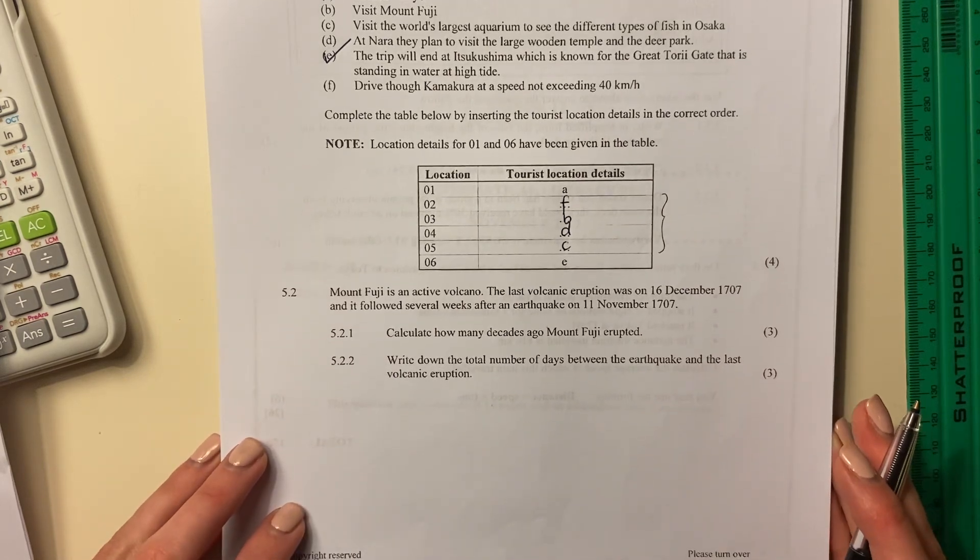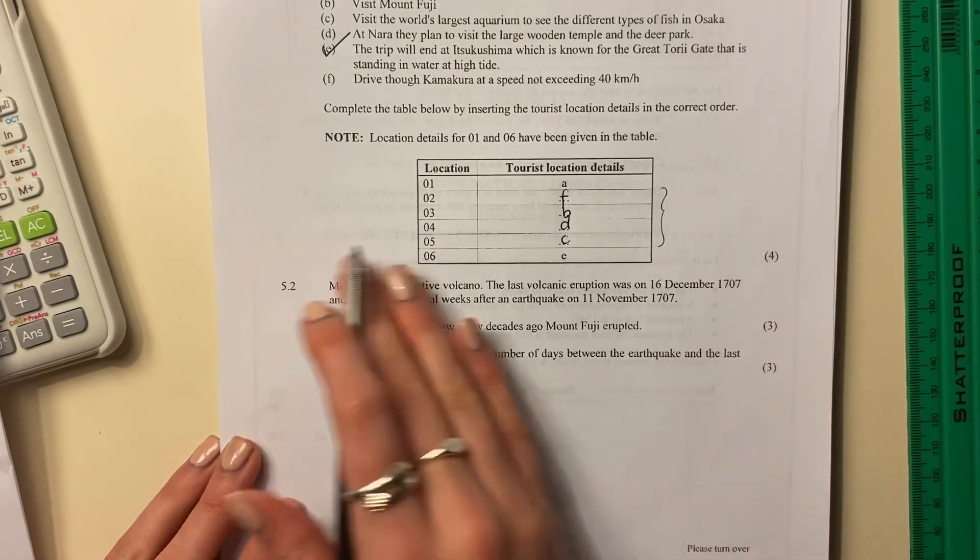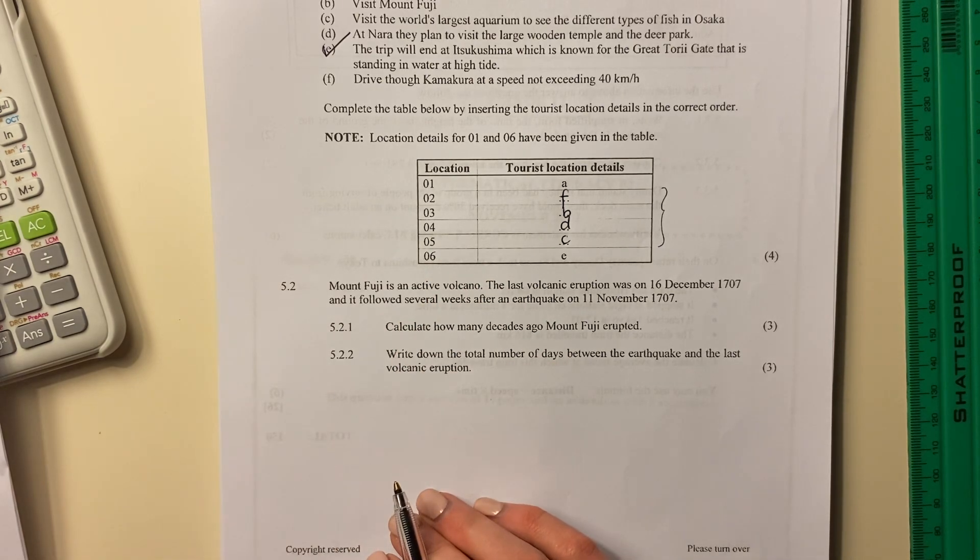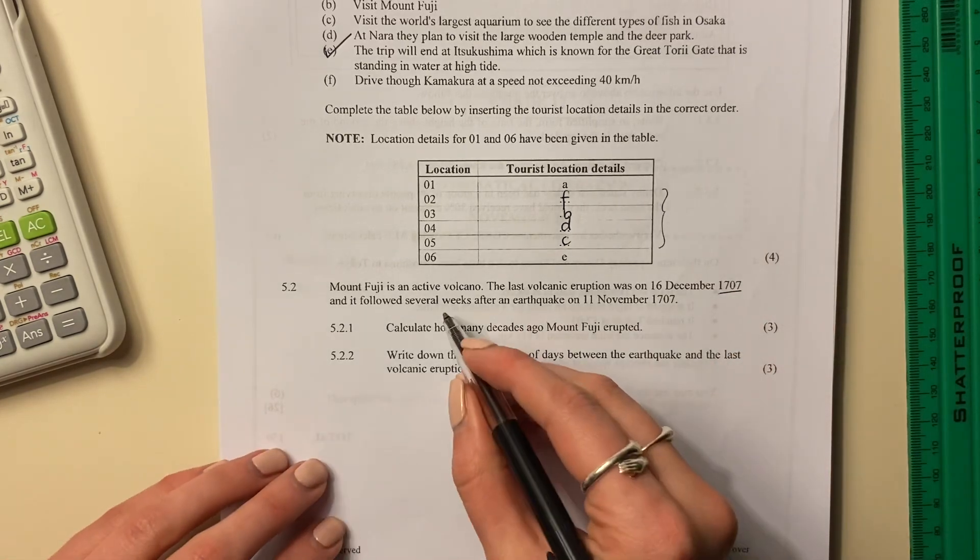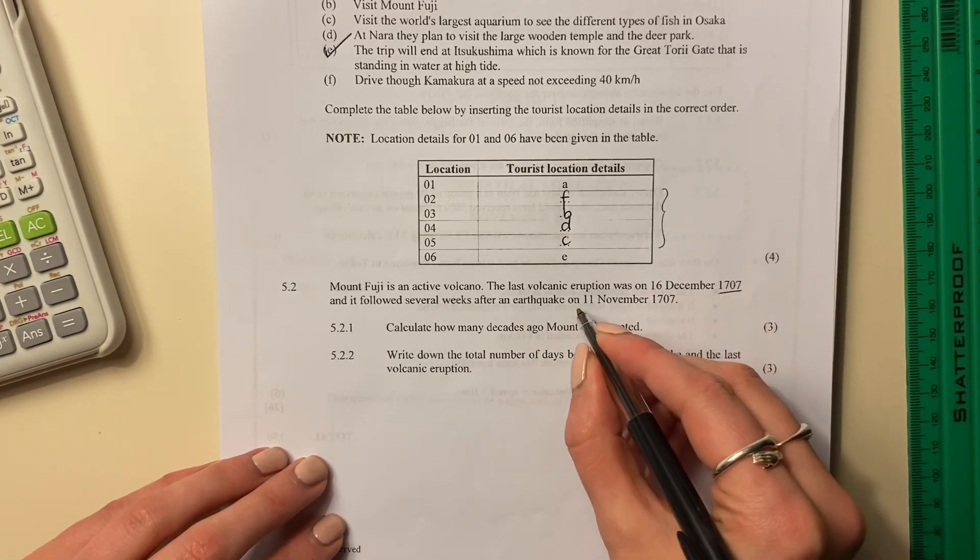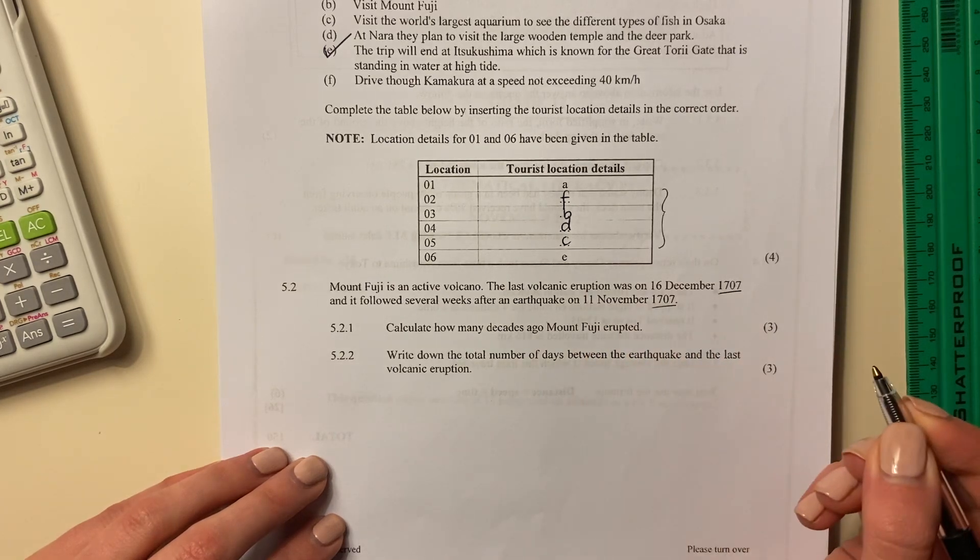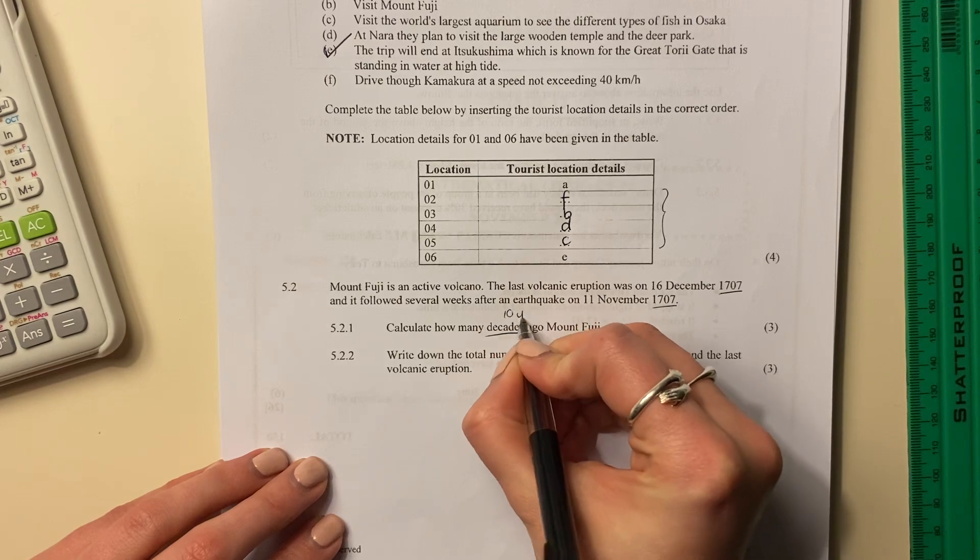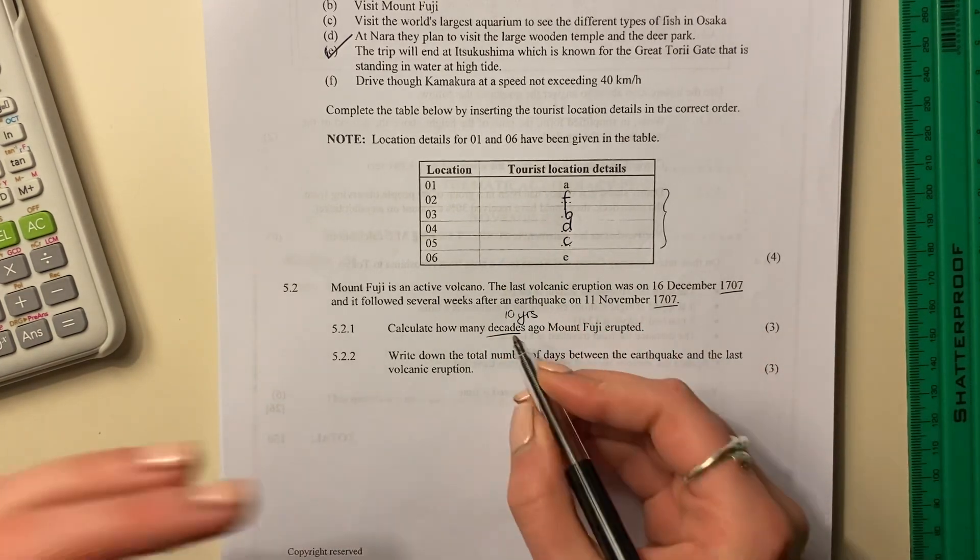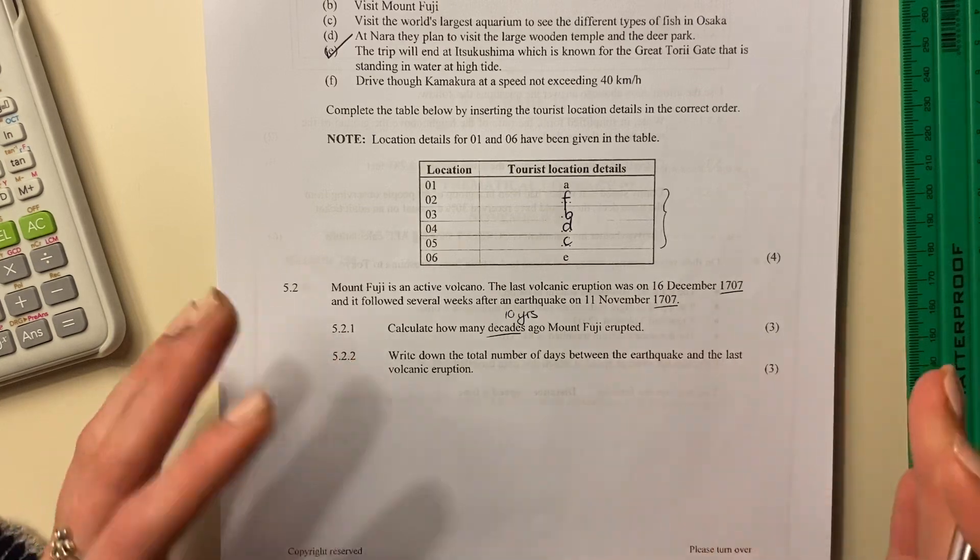Let's move on to the last two questions here. Well, one question, two sub questions. Mount Fuji, right, is an active volcano. The last volcanic eruption was on 16 December 1707, and it followed several weeks after an earthquake on 11 November 1707. Okay, so calculate how many decades, what does a decade mean? It means 10 years. How many decades ago Mount Fuji erupted?